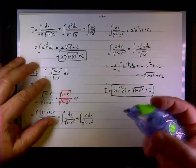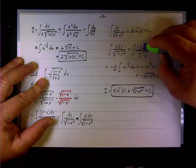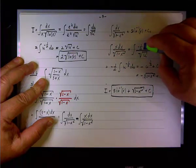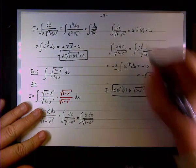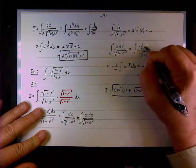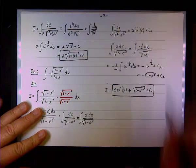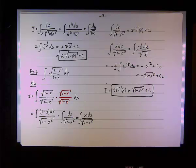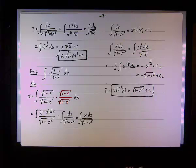There's a correction: there is no u in the numerator, so it's simply negative one-half du. That's a good observation — this is what happens when you rush. Thanks for staying late; we'll continue Thursday, and I'll give you tables to work through.